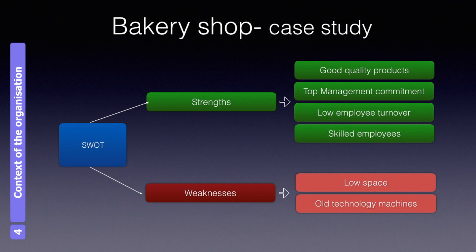Weaknesses listed: first, low space — the bakery shop was small, so they couldn't store more variety of products even when there was sales potential. Second, old technology — the ovens and machinery used for production were old, resulting in a low production rate and ultimately a high cost per piece.